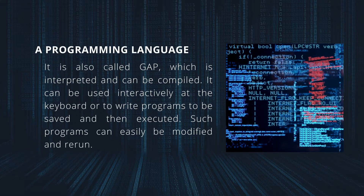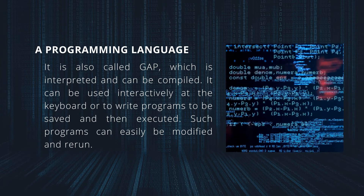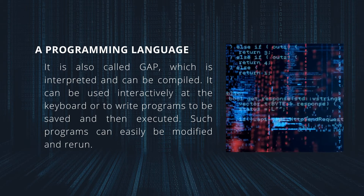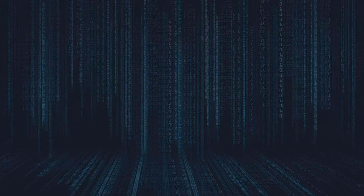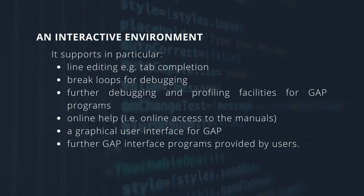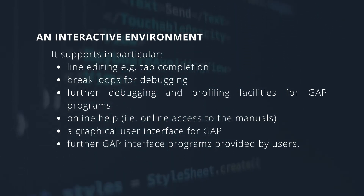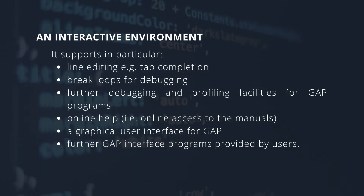Programming language — also called GAP — which is interpreted and can be compiled. It can be used interactively at the keyboard or to write programs to be saved and then executed. Such programs can easily be modified and rerun. The language features Pascal-like control structures, automatic memory management including garbage collection, streams, flexible list and record data types, built-in data types for key algebraic objects, and automatic method selection — building on a mechanism for automatically choosing the highest rank method for a certain operation depending on the current state of all its arguments.